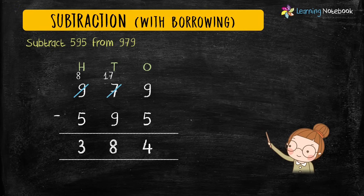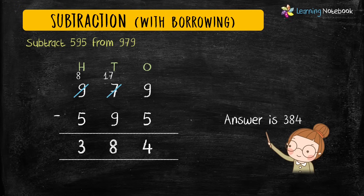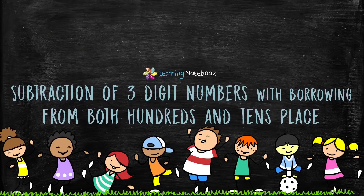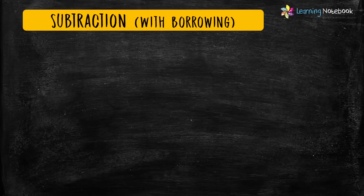We get the answer 384. This is how we do subtraction of three-digit numbers with borrowing from hundreds place. Now let's learn subtraction of three-digit numbers with borrowing from both hundreds and tens place.